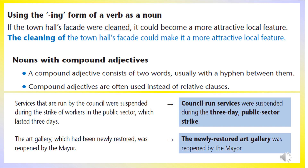The second sentence reads: 'The cleaning of the town hall façade could make it a more attractive local feature.' So you can understand that using the verb is a normal thing, but instead of using a verb we can use the -ing form of that verb as a noun. From these two sentences, the idea should be clear.